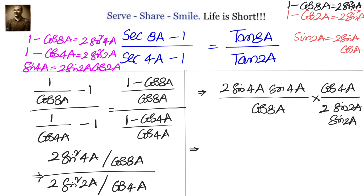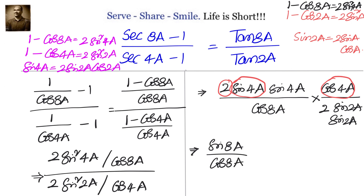Now let's look at what we need from the right hand side. We need tan8a in the numerator, and we know tan8a = sin8a / cos8a. Can we get sin8a in the numerator? Yes, because we have 2 sin4a cos4a, which can be written as sin8a. So let's write sin8a / cos8a — we already got the numerator tan8a.